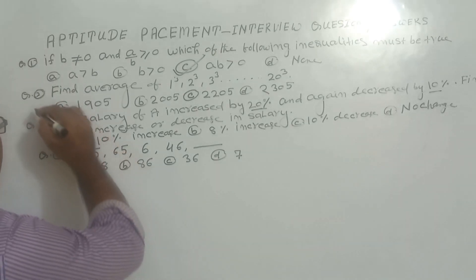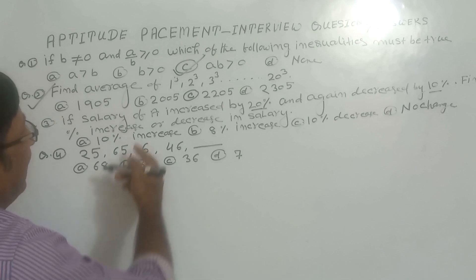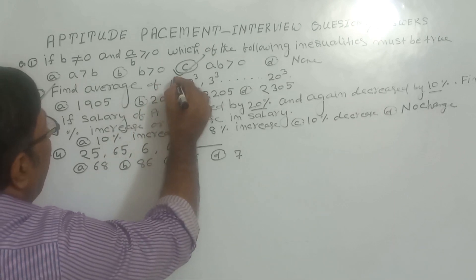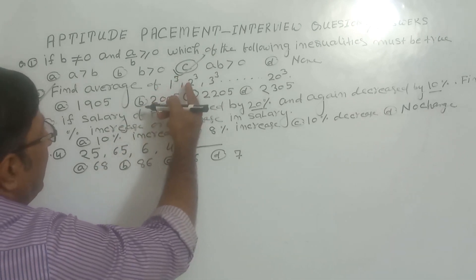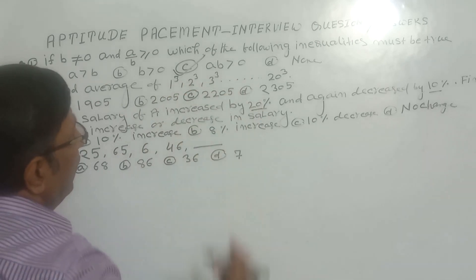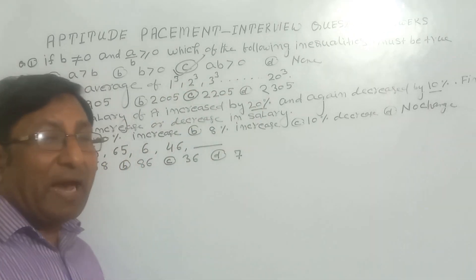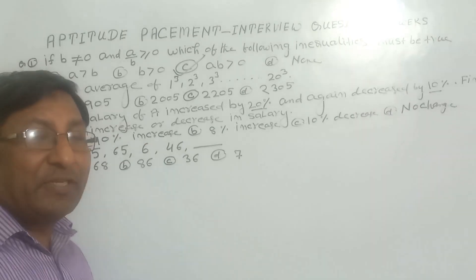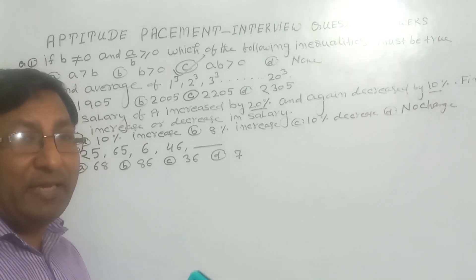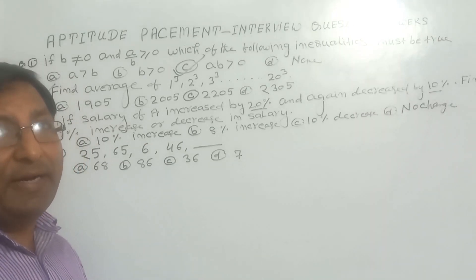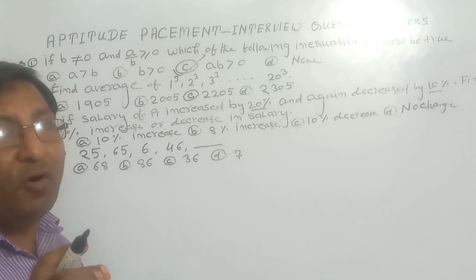Now see the next question. The second question is: find average of 1Q, 2Q, 3Q up to 20Q. You know average is what? Average equals sum of all given observations divided by total number of observations.